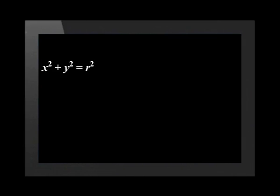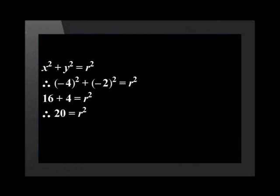We need to use the formula to find the equation of the circle. Let's start by writing it down: x squared plus y squared equals r squared. Now substitute x with negative 4 and y with negative 2. This gives us 16 plus 4 equals r squared. Therefore, 20 is equal to r squared. Therefore, the equation of the circle is x squared plus y squared equals 20. Didn't you find that easy?